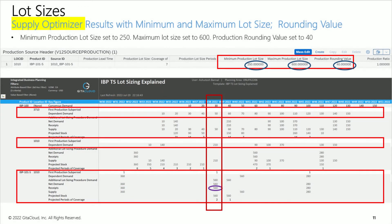We will show you how different supply planning algorithms treat lot size parameters differently. For example, infinite supply heuristic ignores the maximum lot size parameter, but supply optimizer considers it.